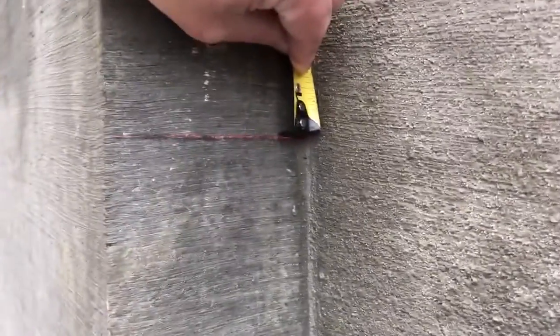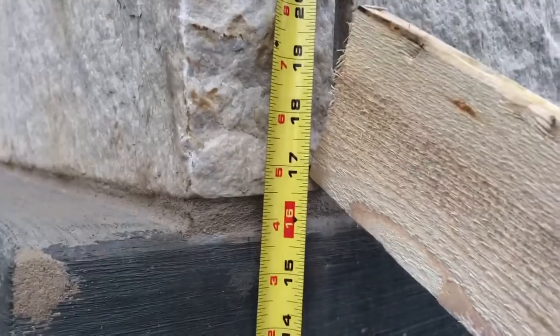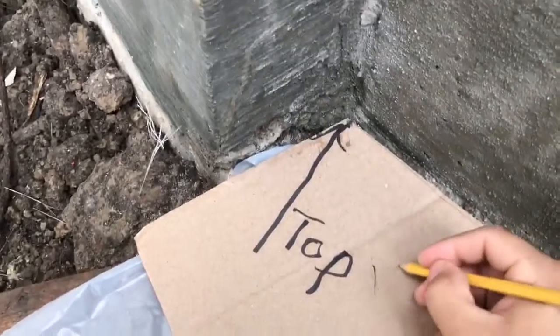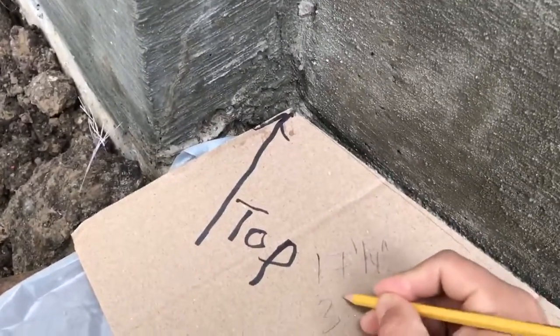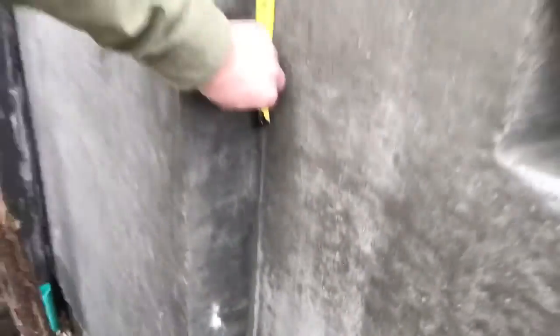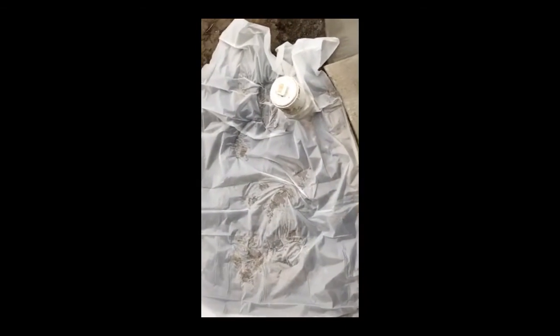We put the tape measure down where our laser level was and we look up — here it's roughly 17 and a quarter. So on our template we're going to put 17 and one quarter inch plus our original 37 and three quarter inch, and that is going to be our height at the top of the rail. We use the same method and steps on the right hand side of the stair.